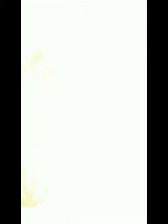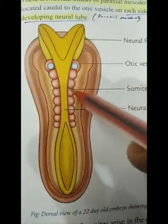Those are the ectodermal derivatives. Moving to mesoderm derivatives: paraxial mesoderm, intermediate mesoderm, and lateral plate mesoderm. Paraxial mesoderm forms somitomeres or somites. Somites are segmental blocks of paraxial mesoderm.